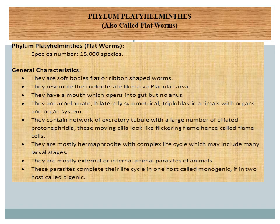General characteristics of Phylum Platyhelminthes: they are soft-bodied, flat, ribbon-shaped worms. They resemble the cnidarians like larva planula. They have a mouth which opens into the gut but they have no anus. They are acoelomate, meaning they have no body cavity. They are bilaterally symmetrical, meaning their body is divided into two equal halves. They are triploblastic animals, meaning they have three body layers: ectoderm, endoderm, and mesoderm, with organs and organ systems.